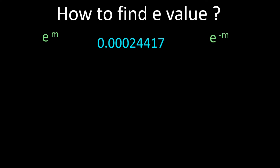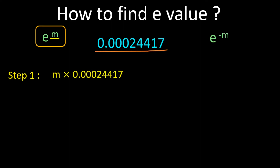Step number one: we will learn how to find e power m value. In step one, you have to multiply the number 0.00024417 with the number given in the power of e. Here m is given in the power of e, so we will multiply m with this number. If asked to find e power 5, then multiply 5 by this number. Whatever number is given in the power of e, multiply it with 0.00024417.